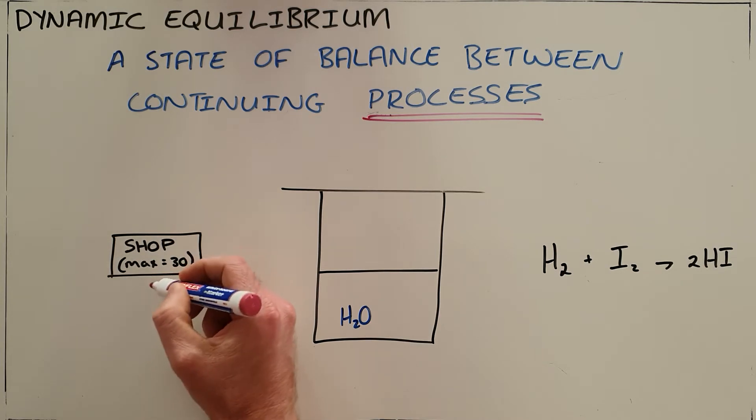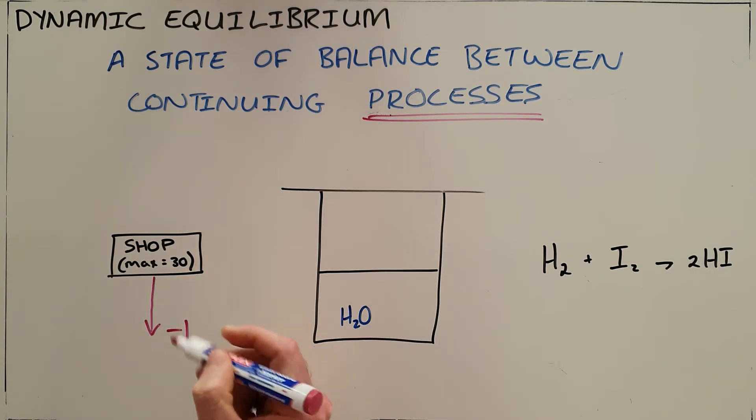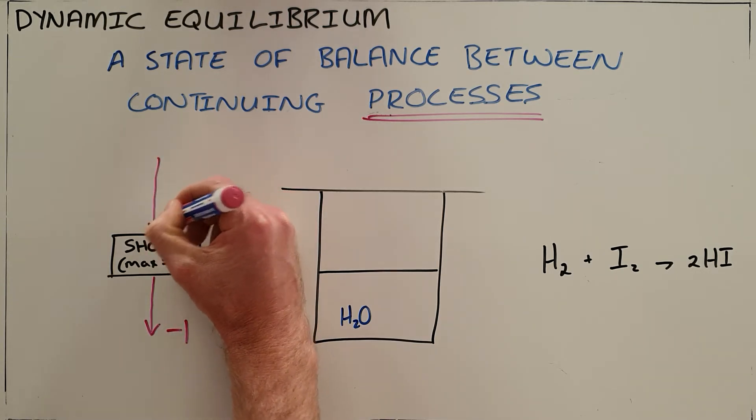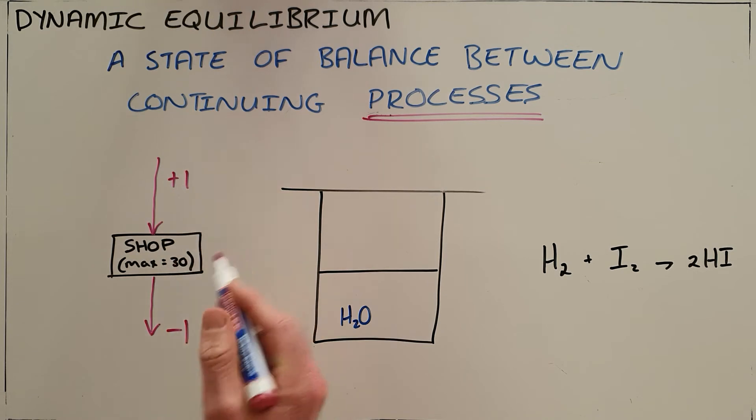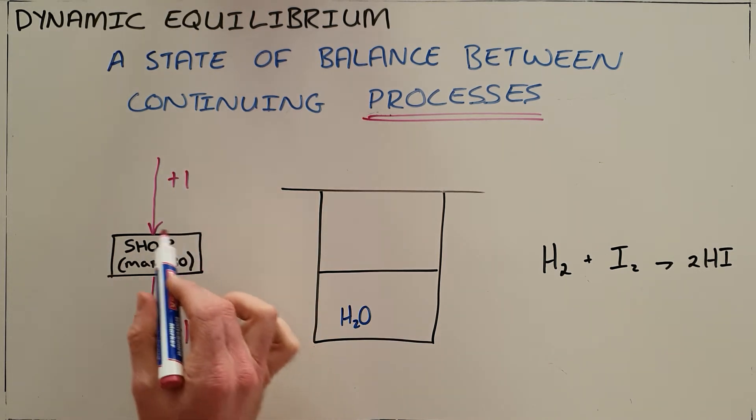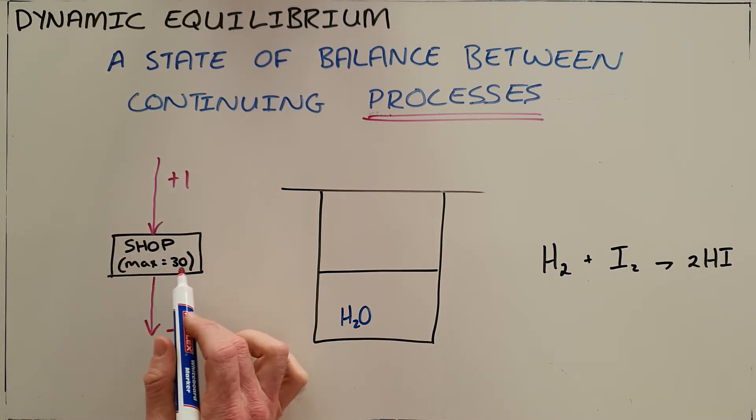We know there is a dynamic equilibrium because there are people queuing outside. Every time one person leaves, one person is allowed in on the other side. It's at equilibrium because there's a balance of 30 people at all times.